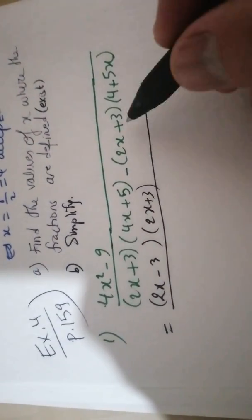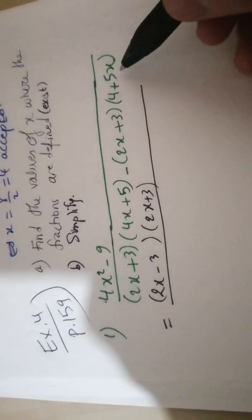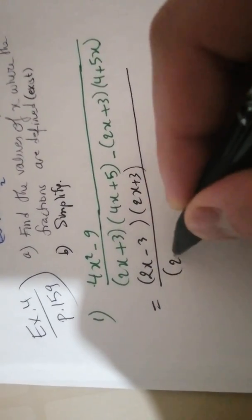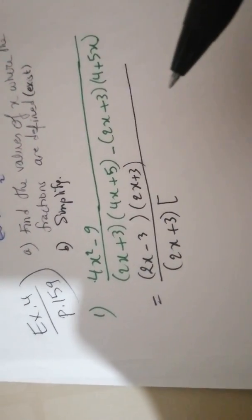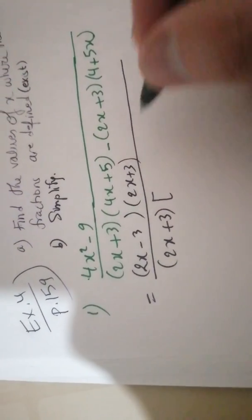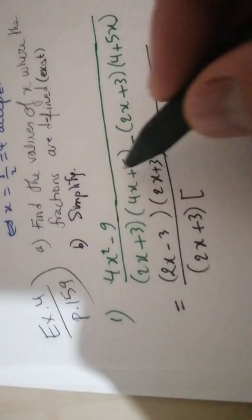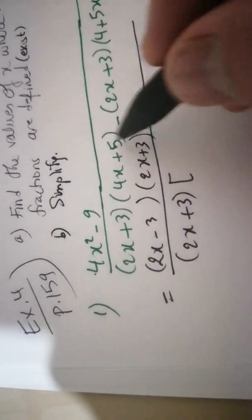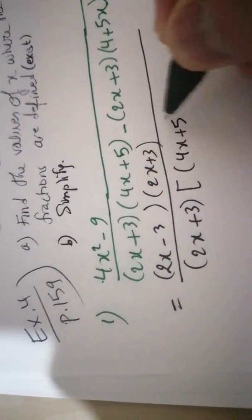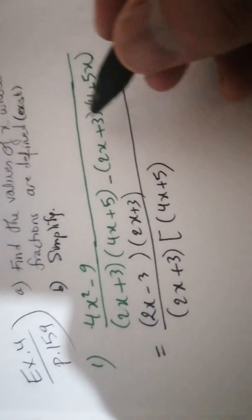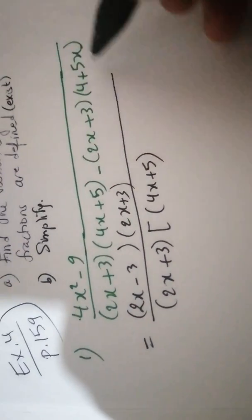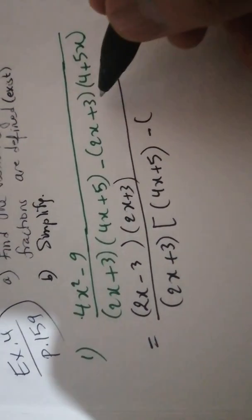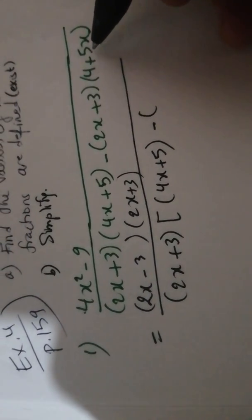Here we have in the denominator two terms. In each term, we have a common factor which is (2x plus 3). So you take (2x plus 3) as a common factor and open a big bracket to write the other factors. So you put (4x plus 5). If we divide the second term by (2x plus 3), it remains minus (4 plus 5x).